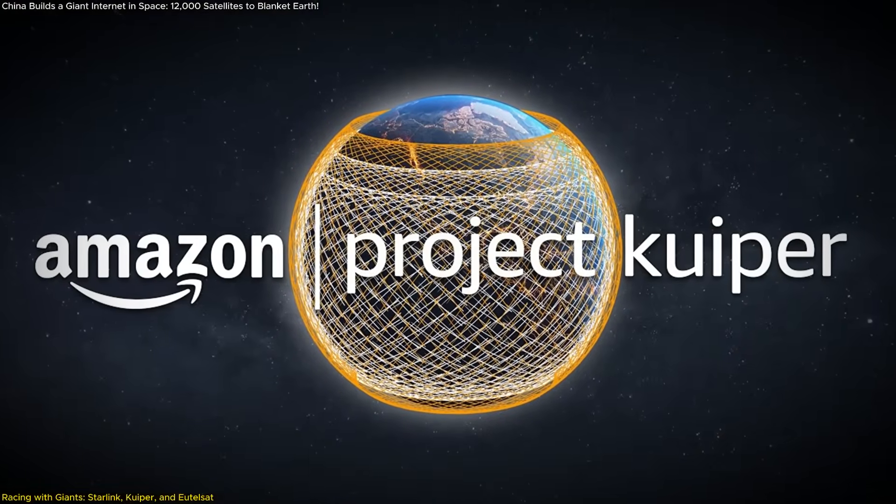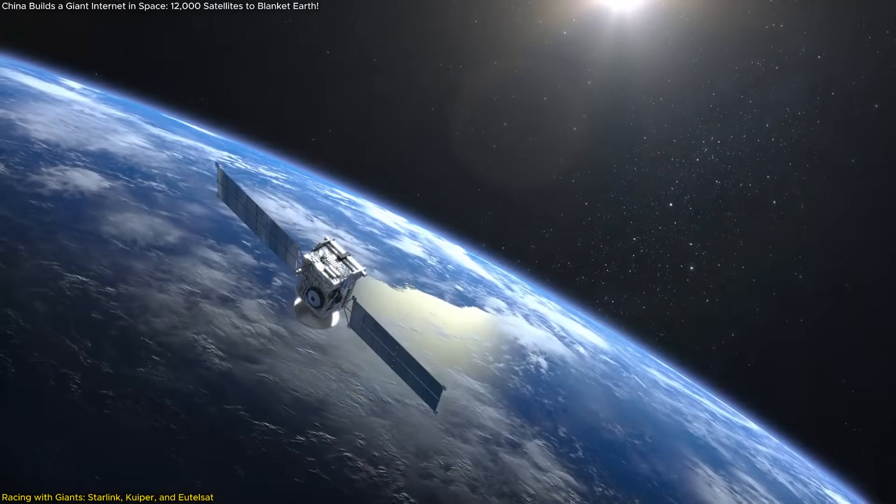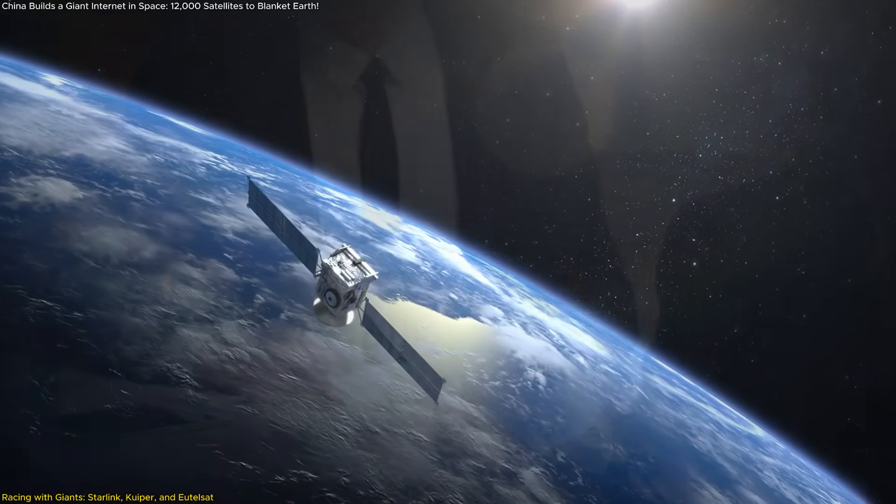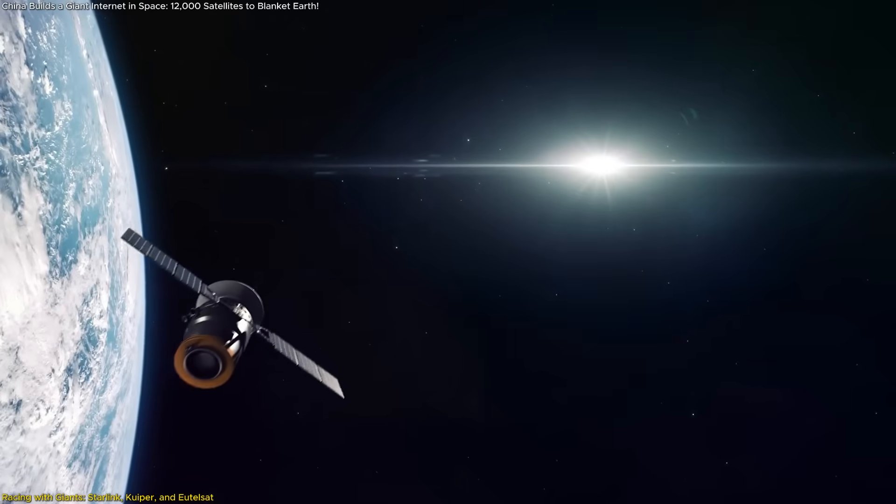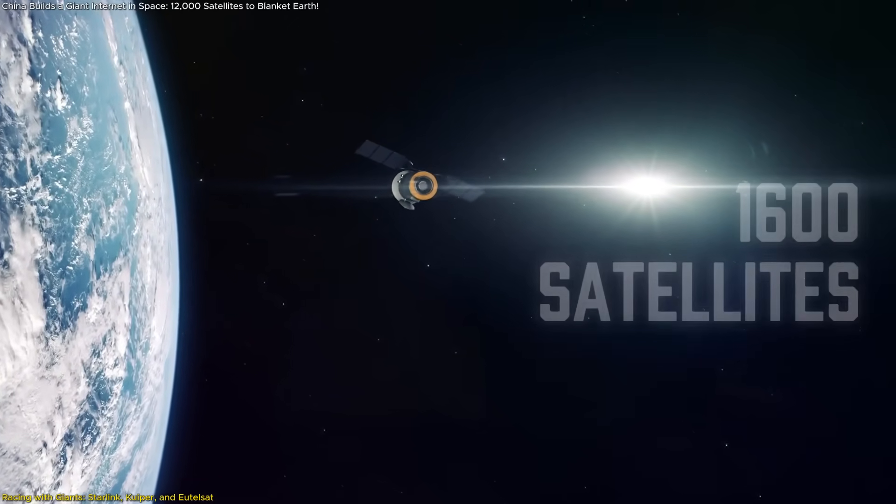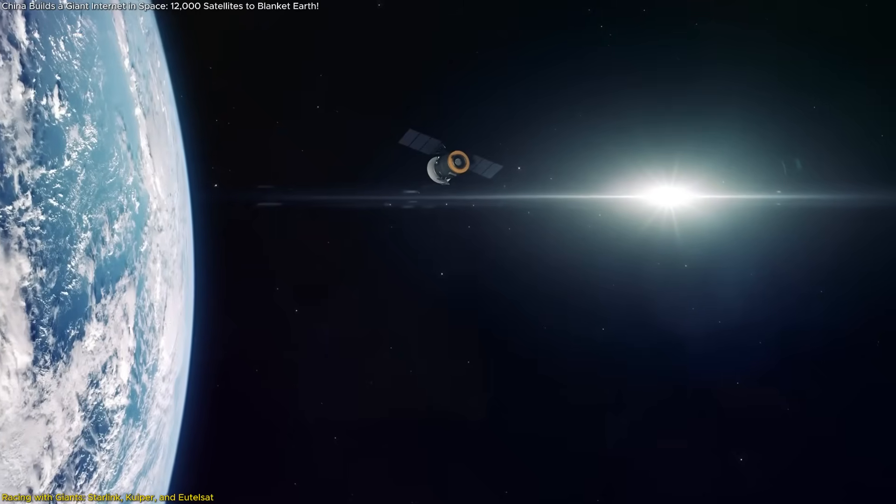Amazon's Project Kuiper, another major player, is planning a constellation of over 3,200 satellites. But as of mid-2025, it has launched fewer than 100. According to the contract, Amazon must launch at least half its network, around 1,600 satellites, by July 2026 to meet regulatory requirements. That gives Kuiper a tight timeline and considerable ground to cover.